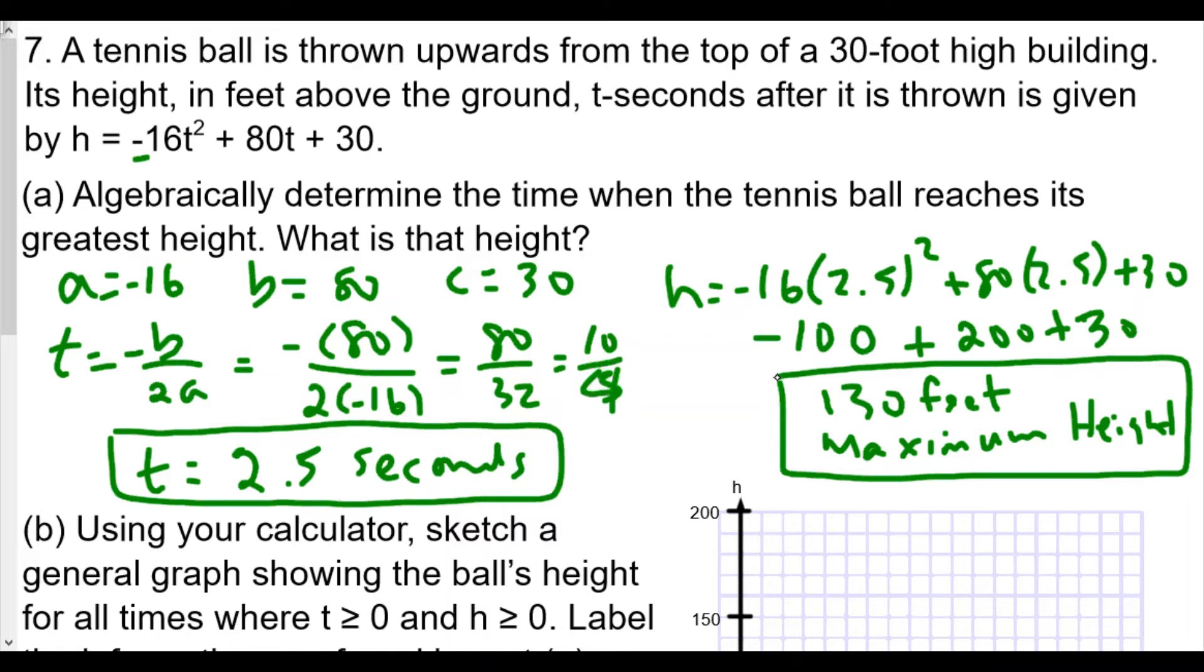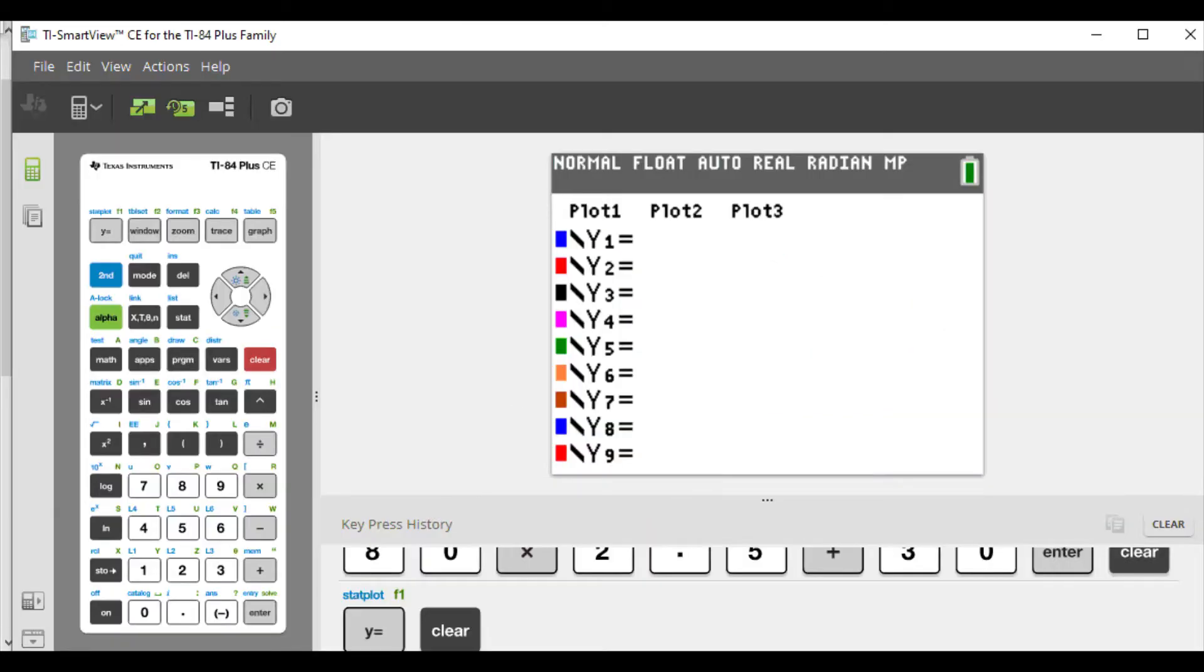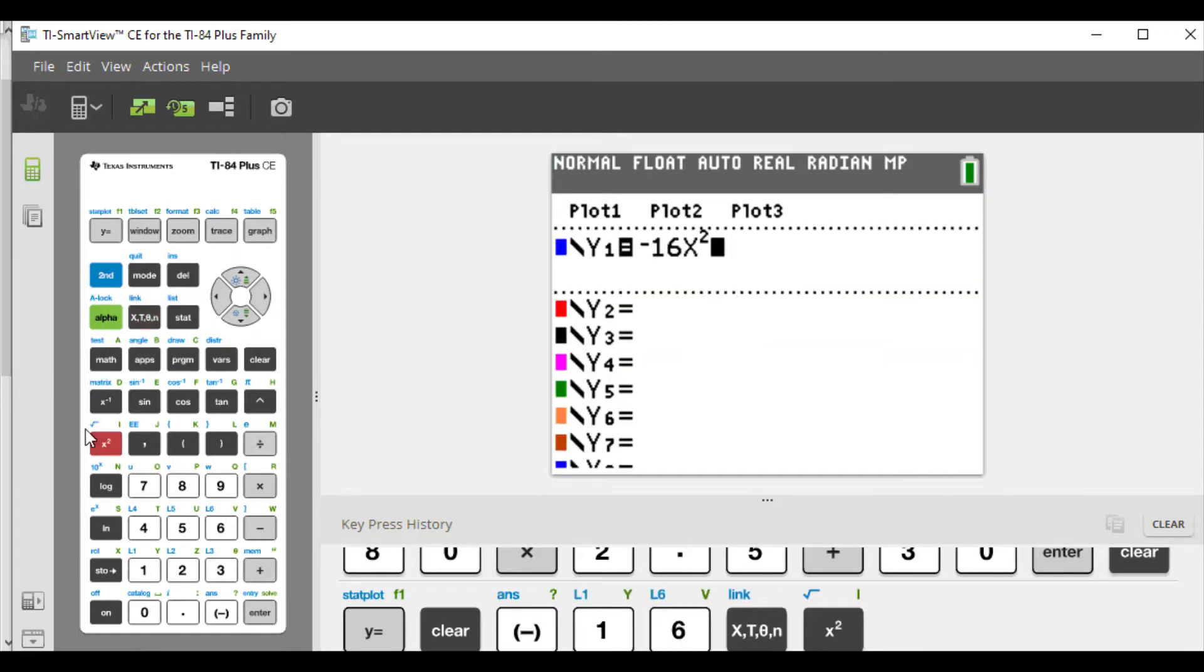Now it says use our calculator to sketch a graph showing the ball's height at all times. A couple of things in this case, so I'm going to grab my graphing calculator but I'm going to lay off the sketching until later on. We have here negative 16 x squared plus 80x and I believe it's plus 30.